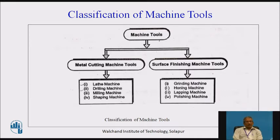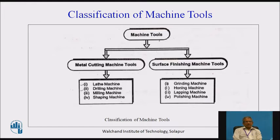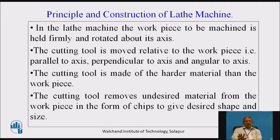Lapping machines remove still less material than grinding. Lapping and polishing machines remove the least material. When going for lapping or polishing, we must keep almost no material to remove — only the surface finishing is carried out.